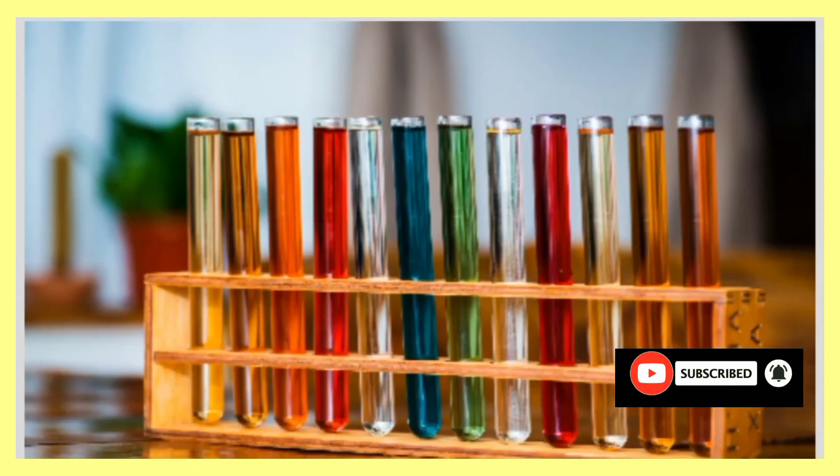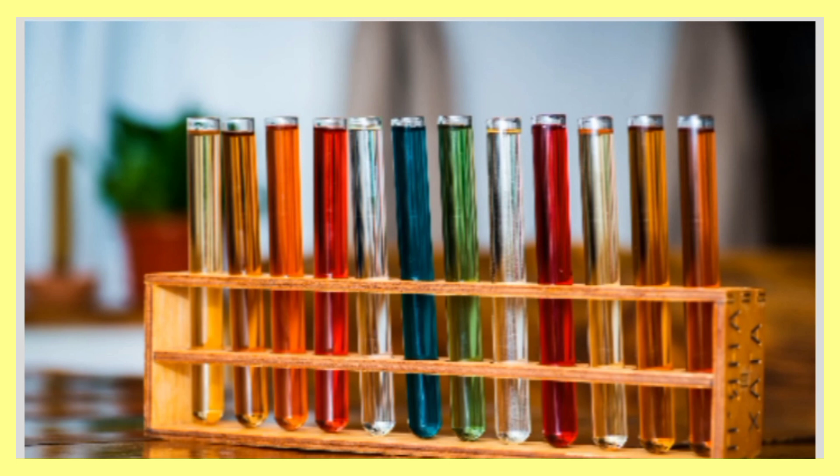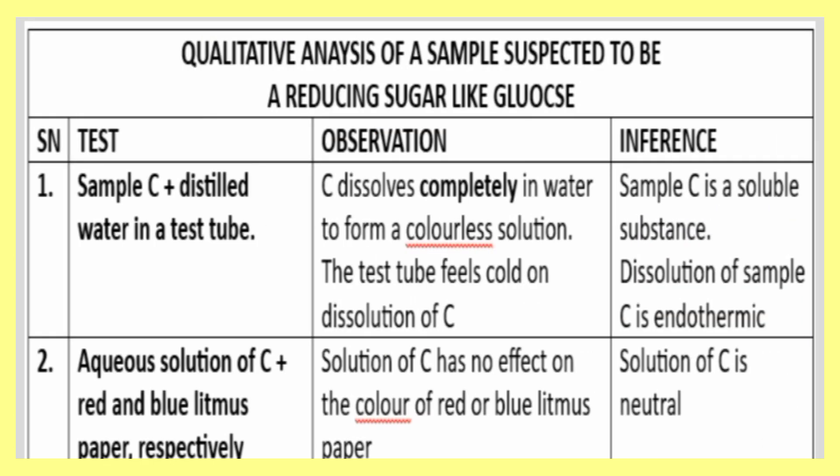When you are running your test, you are expected to use test tubes and some other reagents. This is just a simple way of showing you how your chemistry lab should look like. We are running a simple test on sugar like glucose. Glucose happens to be a reducing agent. The question you are seeing on the screen is not the exact WAEC chemistry question you will meet, but you can see something similar to this and use this note to read and prepare.